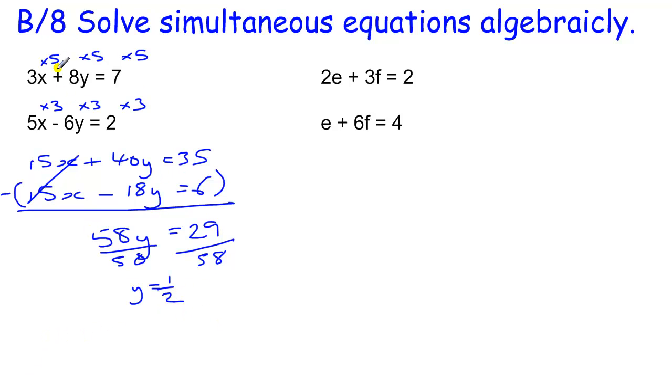Then once we have got that value we can put that into any of these equations we have written above and we will find x. So we will put it into the top one. 3x plus 8 times a half equals 7. So 3x plus 4 equals 7. So 3x equals 3. That tells us that x equals 1. So our solution is x equals 1 and y equals a half.